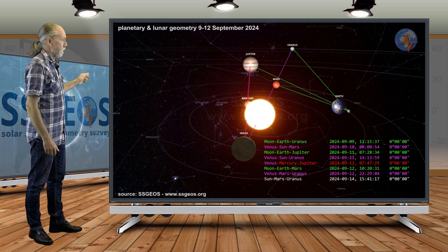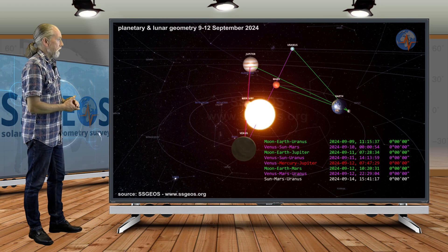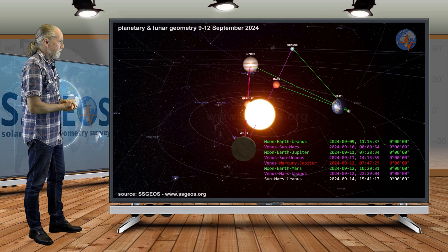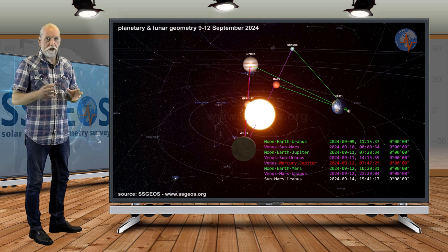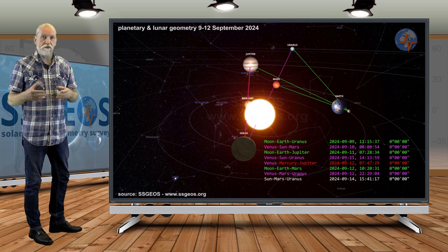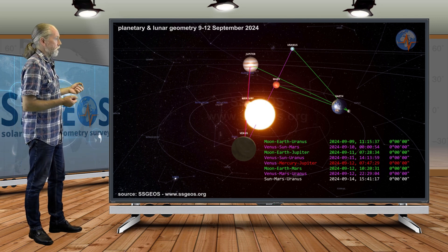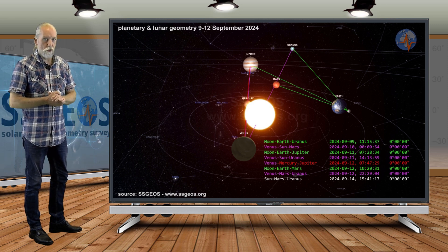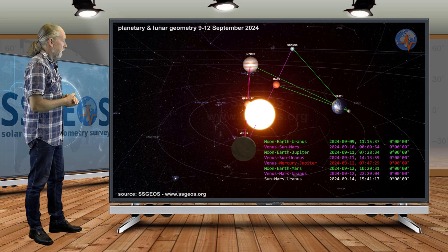That means we have four planetary conjunctions as a result. That's Venus, Sun, Mars, Venus, Sun, Uranus, and also Sun, Mars, and Uranus. And that will be happening primarily from the 10th to the 12th. And there can be an obvious seismic response as a result, also because the lunar geometry converges pretty much with that planetary geometry.